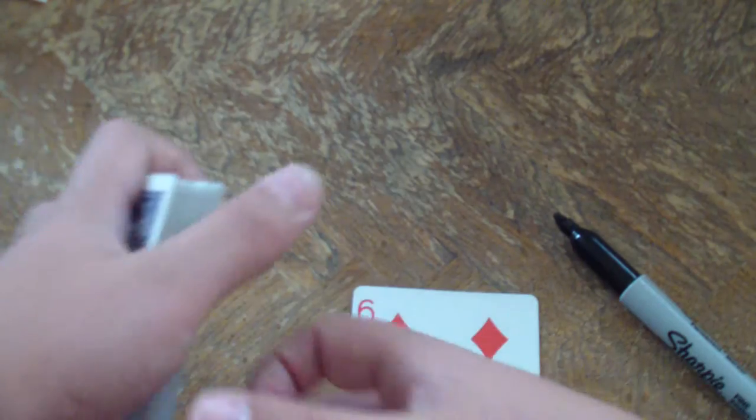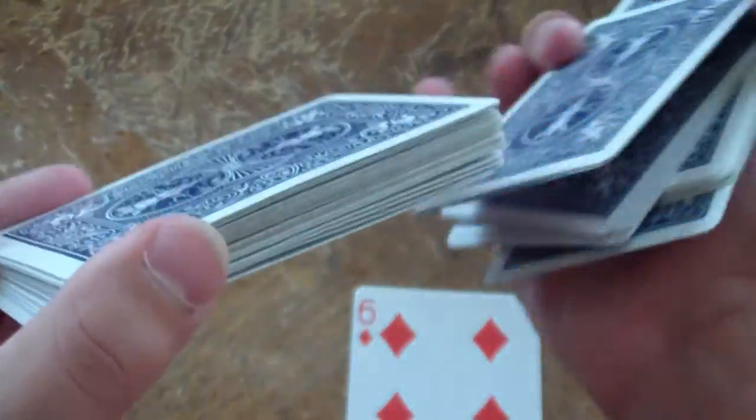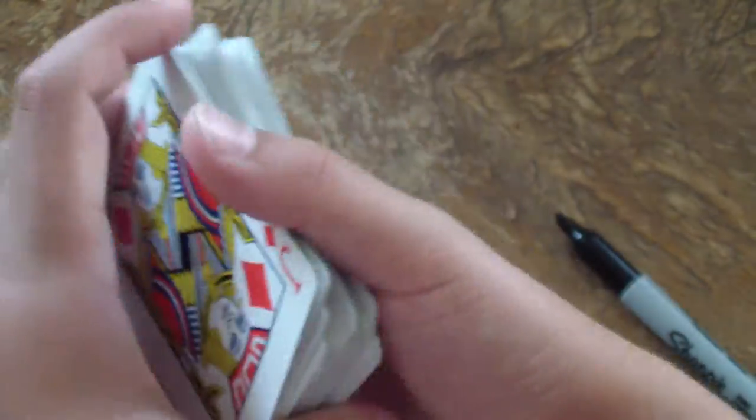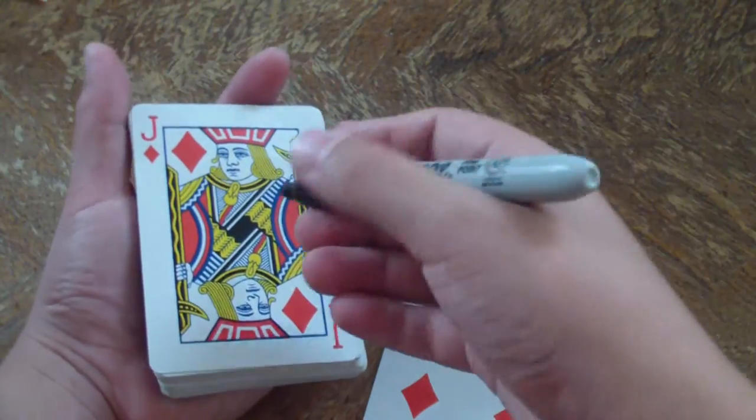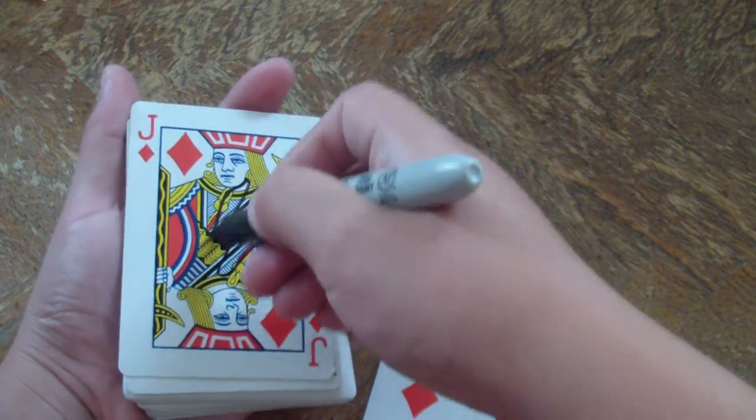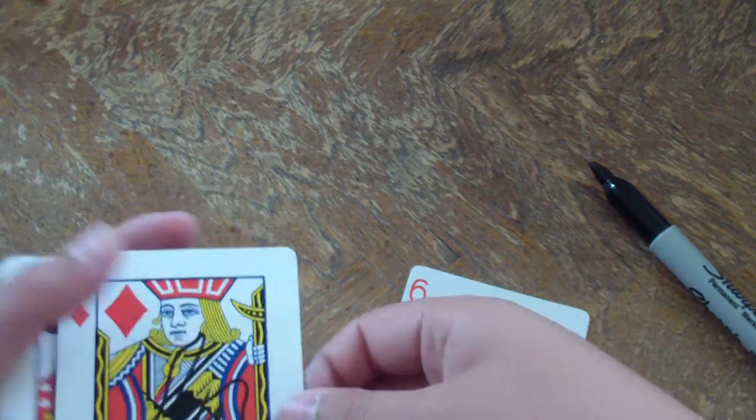So you want to do a wrist kill, set this card down. Next thing you want to do is do a Hindu force. When they say stop, flip over the whole pack and have them sign the face of this card. Next just set this card down.